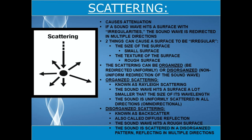Scattering is the third factor that causes attenuation. If a sound wave hits a surface with irregularities, the sound wave is redirected in multiple directions. Two things can cause a surface to be irregular: the size of the surface, meaning a small surface, or the texture of the surface, meaning a rough surface. Scattering can be organized — redirected uniformly — or disorganized, meaning a non-uniform redirection. Organized scattering is also known as Rayleigh scattering, where the sound wave hits a surface much smaller than its wavelength and is uniformly scattered omnidirectionally. Disorganized scattering is also known as backscatter or diffuse reflection, where the sound wave hits a rough surface and is scattered in a disorganized pattern in multiple directions.